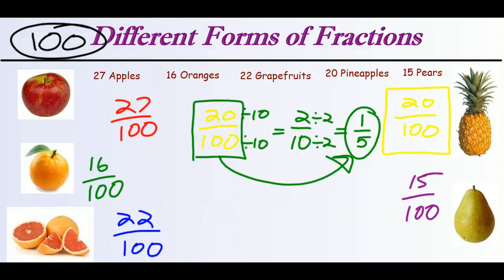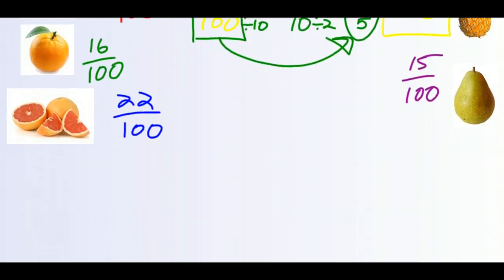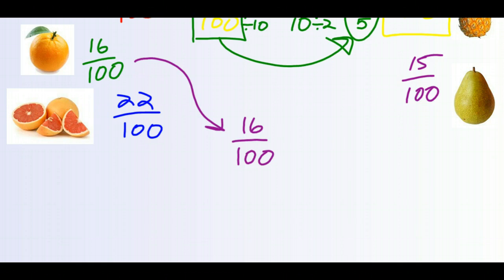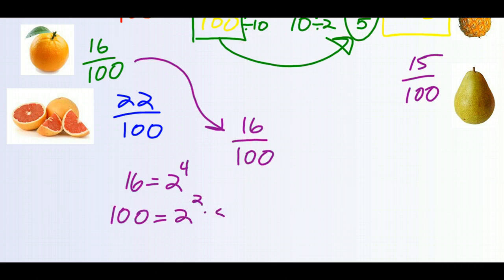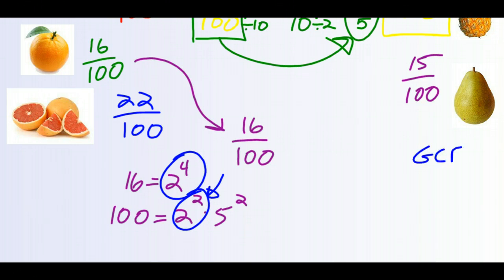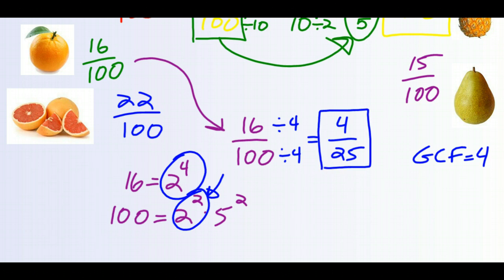Now let's take a look at 16 out of 100 — the oranges. Let's try to find the GCF of 16 and 100. Go ahead and pause the video and see what you can find. 16's prime factorization is 2 to the 4th. 100's prime factorization is 2 squared times 5 squared. So the only thing 16 and 100 share are two 2's in their prime factorization, making the GCF equal to 4. If we divide both numerator and denominator by 4, we have 4 out of 25, which is as simple as we can get — 4 and 25 share no common factors.